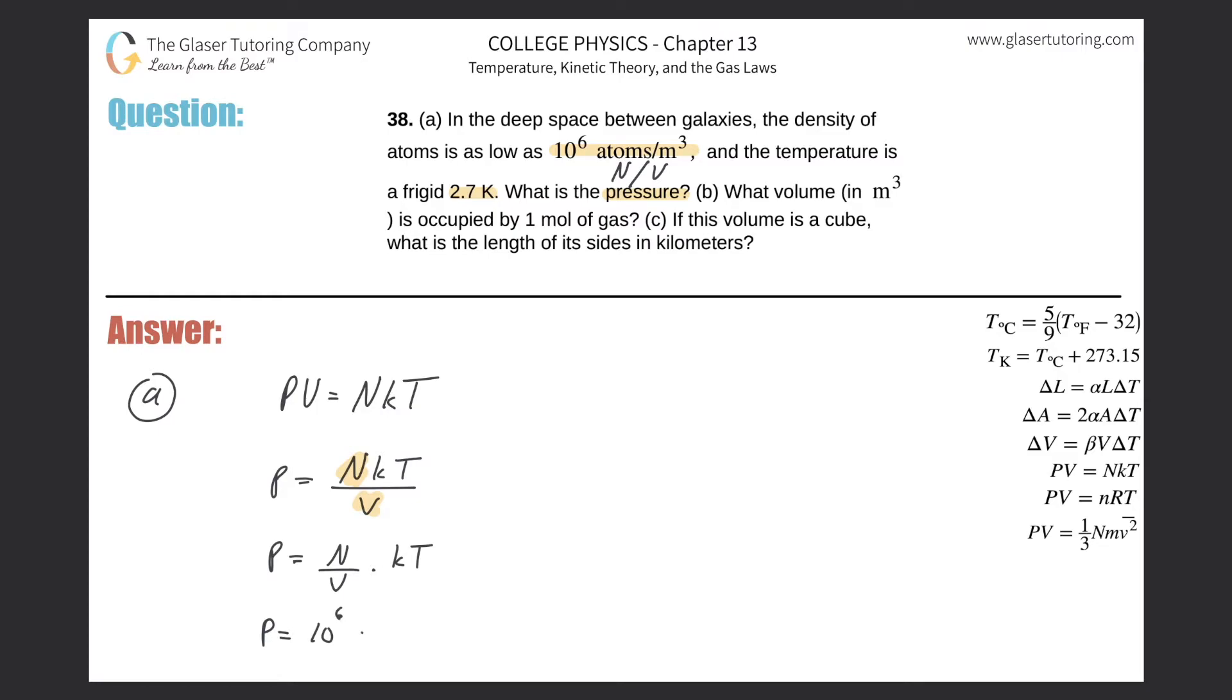That's legal. Now what I can do is simply plug in the values. So I have my 10 to the 6—that's the number of atoms per volume—10 to the 6 multiplied by the Boltzmann constant. Alright, that's going to be 1.38 times 10 to the negative 23rd, joule per Kelvin or whatever, and then multiplied by the temperature in Kelvins, and the temperature in Kelvin will be as they told us, 2.7.